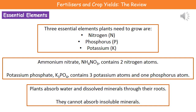We can add fertilizers to the soil to add these essential elements, enabling plants to grow and produce a higher yield. If we consider one particular fertilizer, ammonium nitrate, which has the formula NH₄NO₃, we can see that out of those three essential elements the only one present is nitrogen, and there are two nitrogen atoms in that formula.